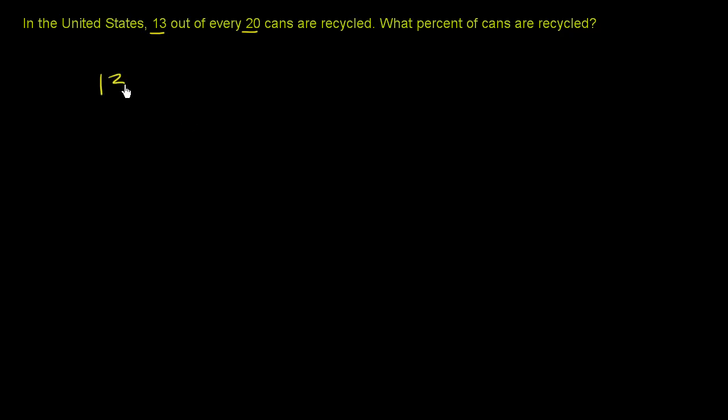So 13 out of every 20 are recycled. So 13 20ths, or 13 over 20, could also be viewed as 13 divided by 20.